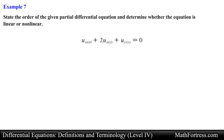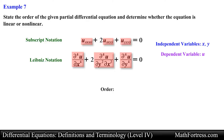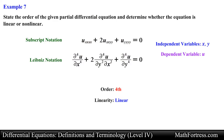Let's try the next example. Here we have a PDE written using subscript notation. We can also rewrite it using Leibniz notation. The dependent variable is u and the independent variables are x and y. For the order, we have three partial derivatives and all of them are fourth partial derivatives, so this PDE is fourth order. Checking linearity: all partial derivatives are raised to the power of 1, the products of the partial derivatives are not in terms of the dependent variable u, and there are no transcendental functions in terms of the dependent variable. This PDE is linear. In the end, this equation is a fourth order linear PDE.